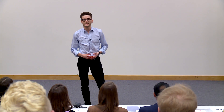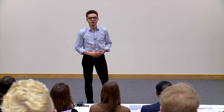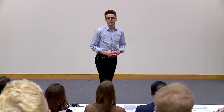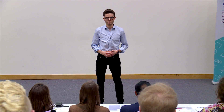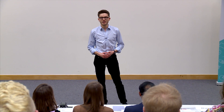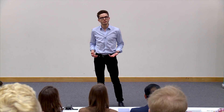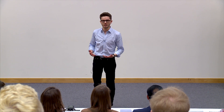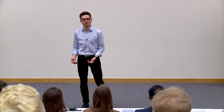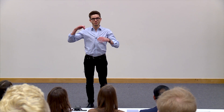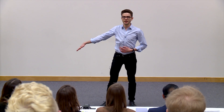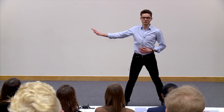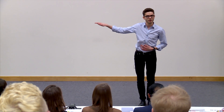Spermatozoa were discovered in 1677 by pioneering Dutch lens maker Anton van Leeuwenhoek. Back then, he called them animalcules — small animals — because essentially they look like small animals. They have a head and a tail, called flagellum, and they wave this tail in order to propel themselves through a fluid.